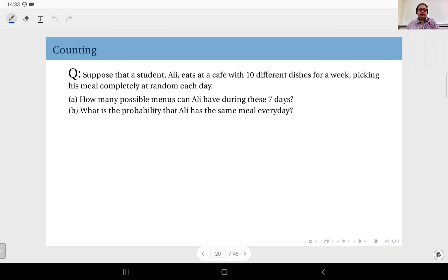Now we are going to start our discussion with a simple example. Suppose that a student, Ali, eats at a cafe with 10 different dishes for a week, picking his meal completely at random each day. He does this for seven days. And the first question asks, how many possible menus can Ali have during these seven days?